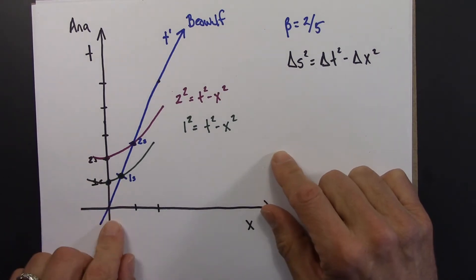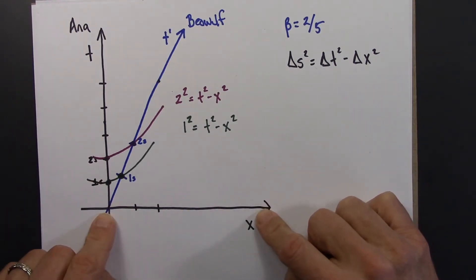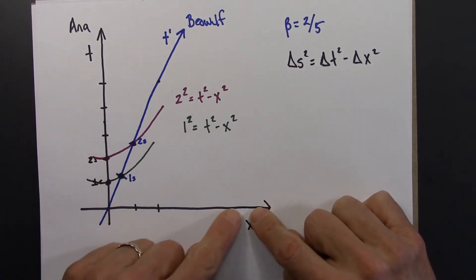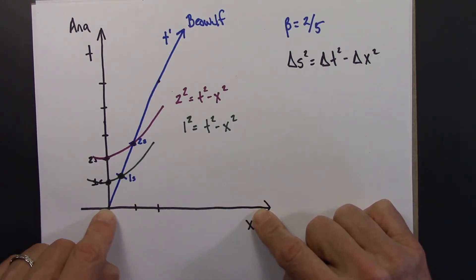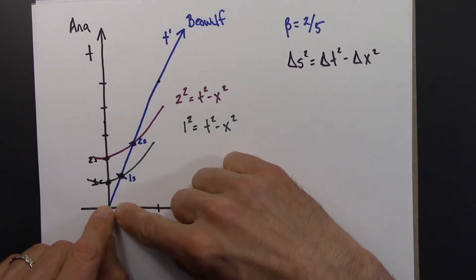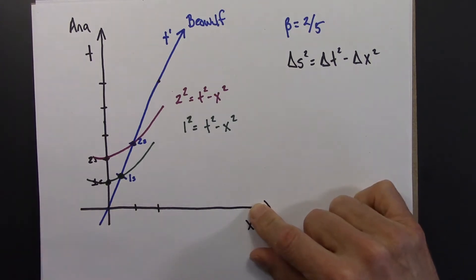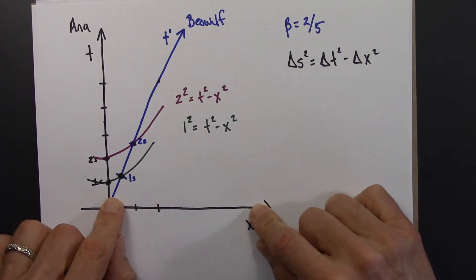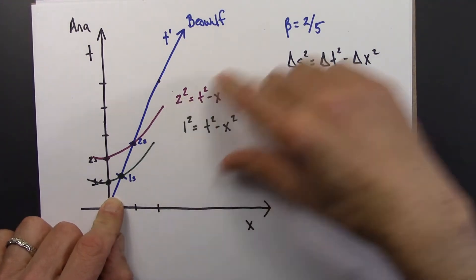Here's a way to think about it. An x-axis is the set of all events in spacetime that occur at the time t equals 0 — that are simultaneous with the time at the origin, t equals 0. So with that in mind, we're going to think about what x' is on this diagram.